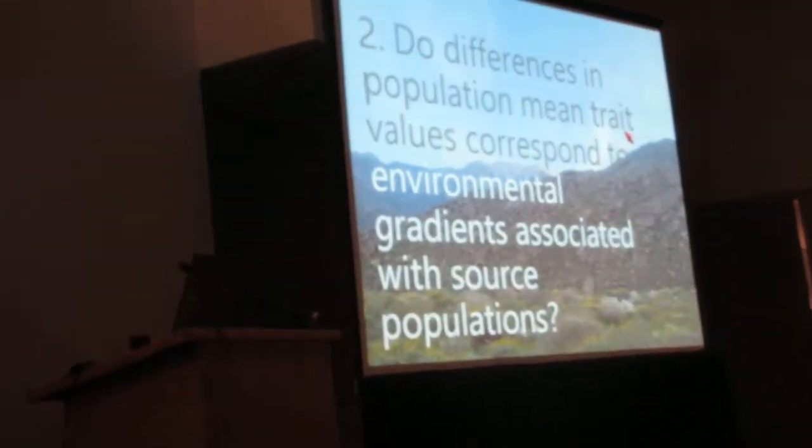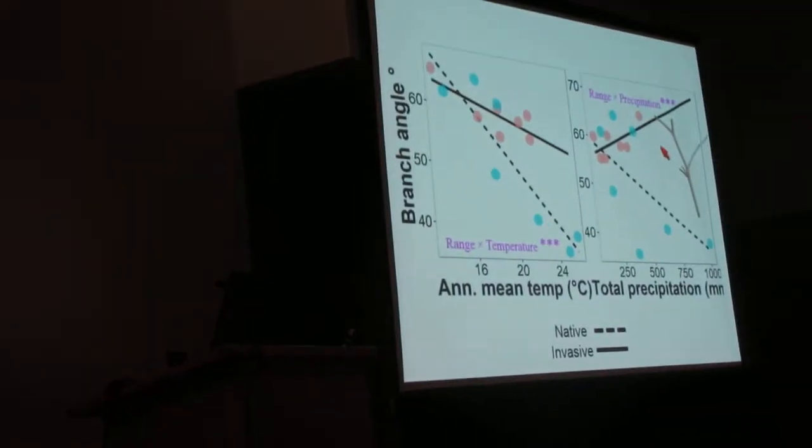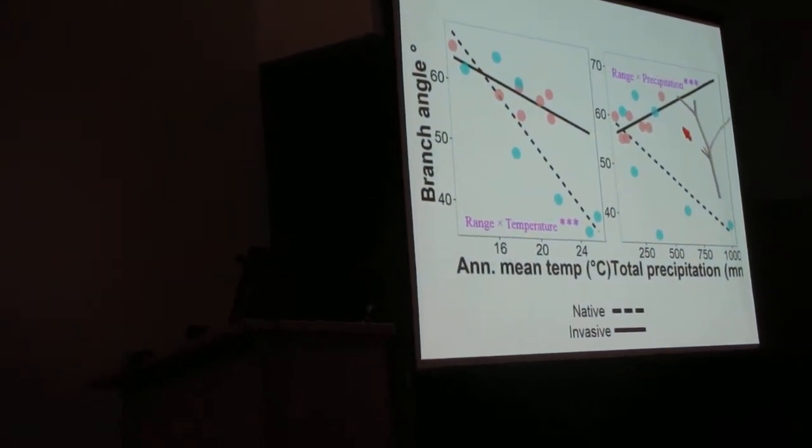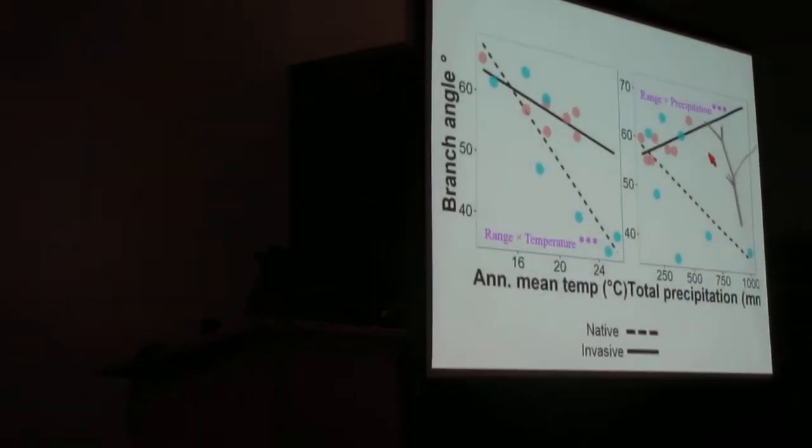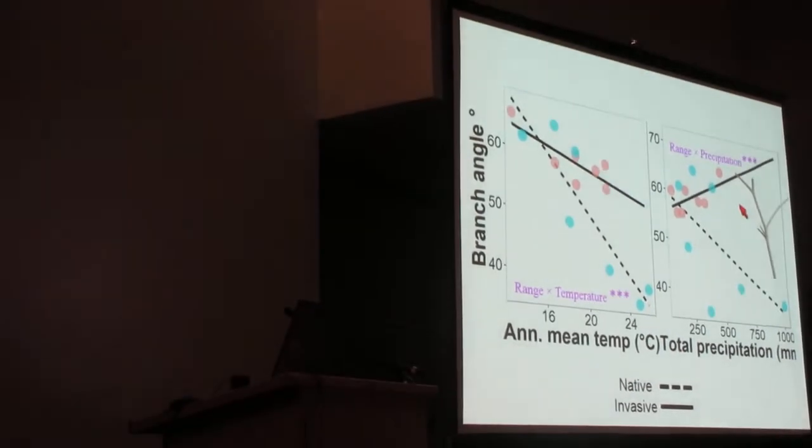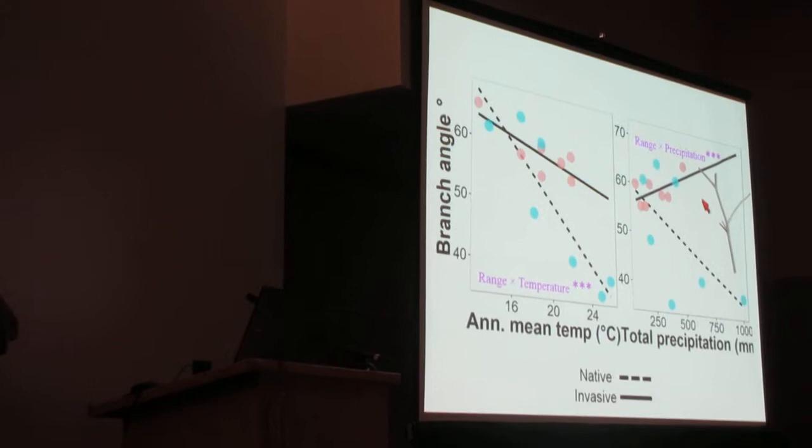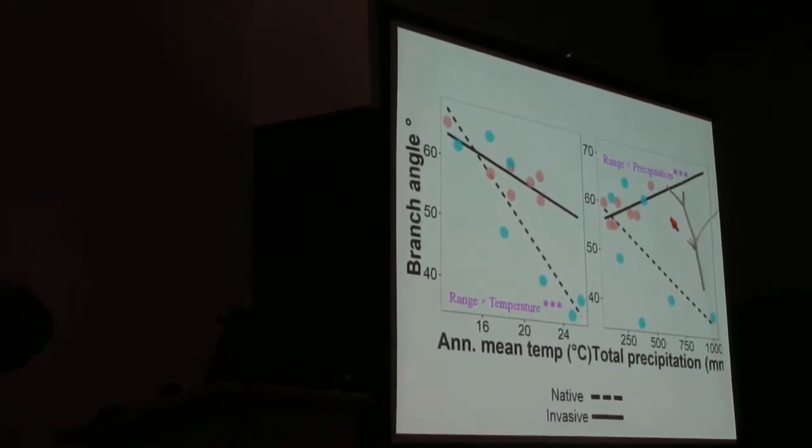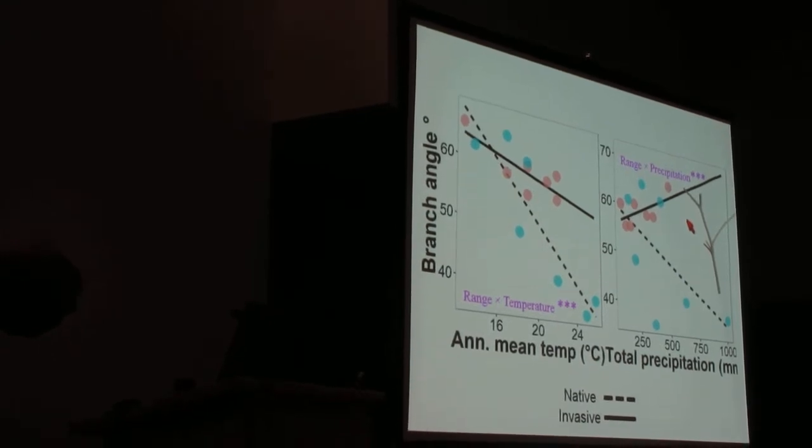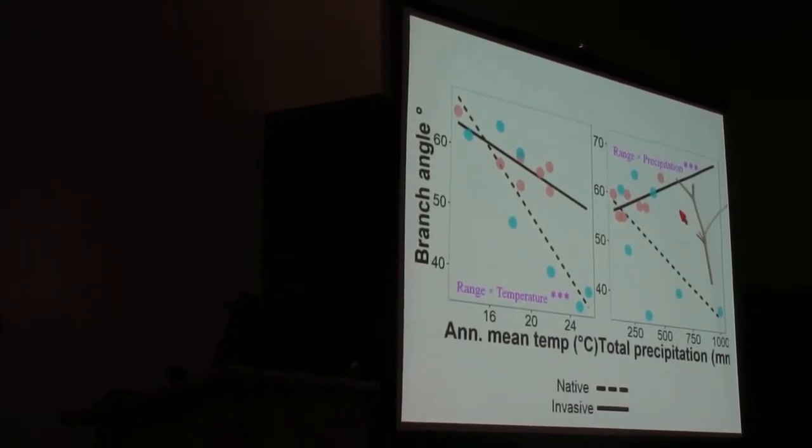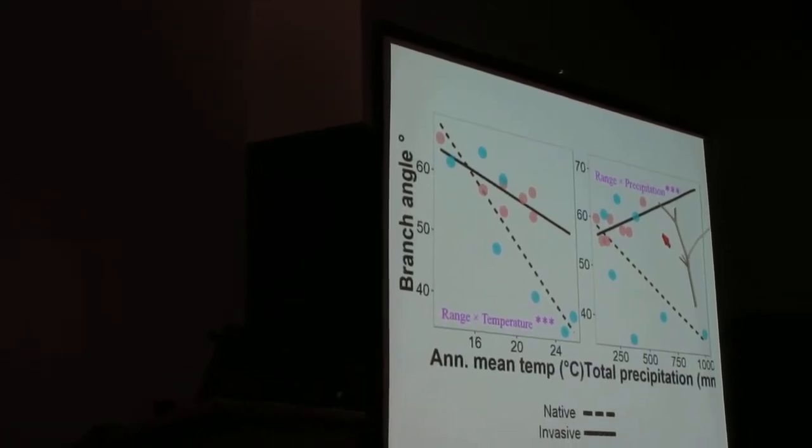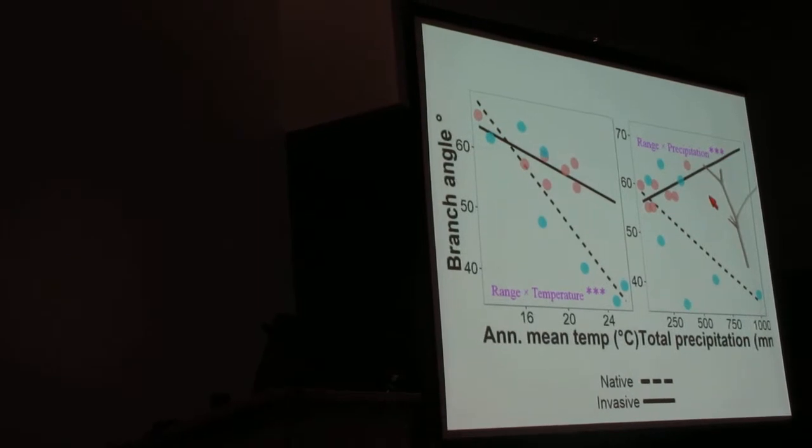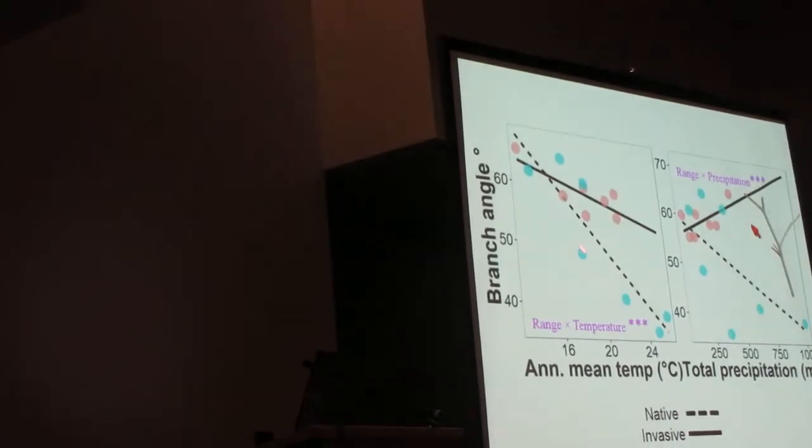Moving on to my second question. I'm only showing results that have significant interactions, and I'm only showing results with invasive clines that are either decreasing or increasing. I'm showing no flat invasive clines. The branch angle, I found that it decreases in the invasive range and also decreases in the native range as a response to temperature. For precipitation, it goes the other way. It increases with increasing temperature in the invasive range, but has the same opposite trend in the native range.